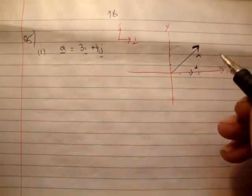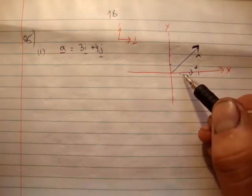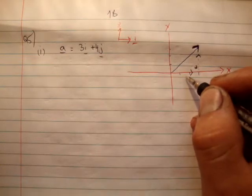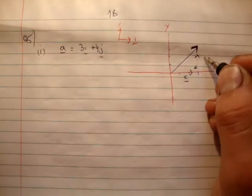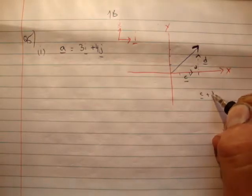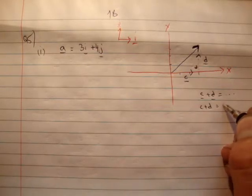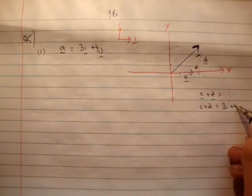What I've done here is I've broken it up into two vectors. So I've done the opposite of adding, whereas usually you would have been given, say this vector c and the vector d, and you would have calculated c plus d equals dot dot dot, and it happens to be that c plus d is equal to 3i plus 4j.